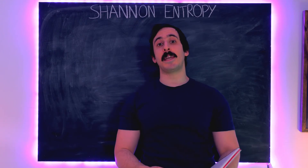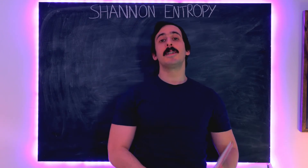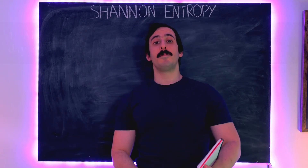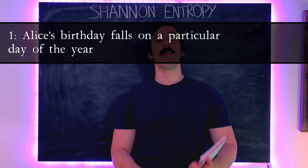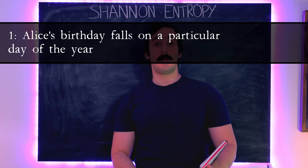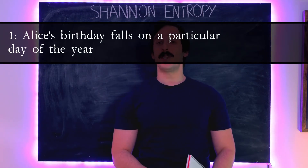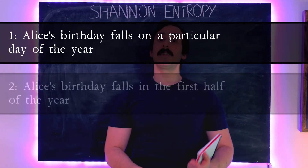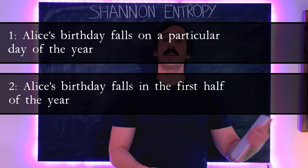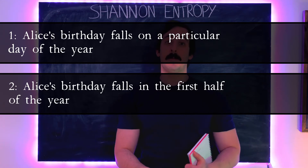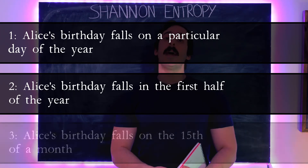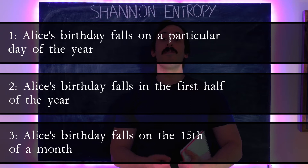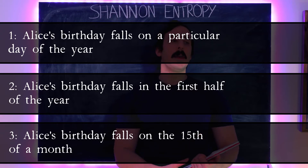Statement one: Alice's birthday falls on a particular day of the year. Statement two: Alice's birthday falls in the first half of the year. Statement three: Alice's birthday falls on the 15th of a month.